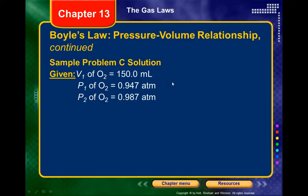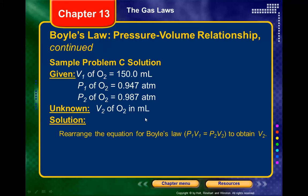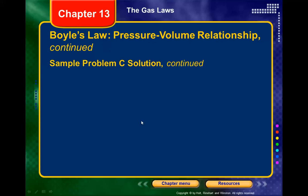Our initial conditions are the known volume and pressure. We're given a new pressure, so our objective is to find the new volume V2. Rearranging P1V1 = P2V2 to solve for V2 gives: V2 = P1 × V1 ÷ P2.